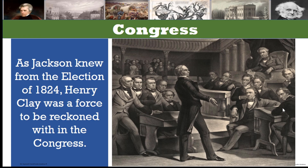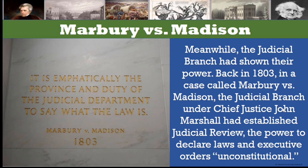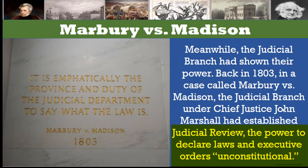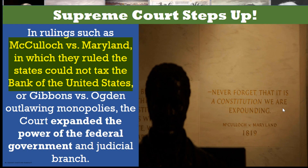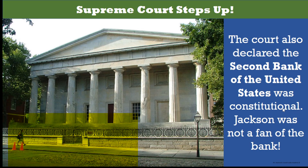Prior to Jackson's presidency, the other branches had flexed their powers as well. As Jackson knew from the election of 1824, Henry Clay and the Congress was a force to be reckoned with, and he would have to rely on their support. Meanwhile, the judicial branch had been slowly gaining power in decisions ever since — they were somewhat neglected in the Constitution. But in 1803, a case called Marbury v. Madison, under the newly appointed Chief Justice John Marshall, had established what's called judicial review — the power to declare laws and executive orders unconstitutional. In other rulings such as McCulloch v. Maryland, in which they ruled that states could not tax the Bank of the United States, or Gibbons v. Ogden, which outlawed monopolies, the court expanded the power of the federal government and the judicial branch.